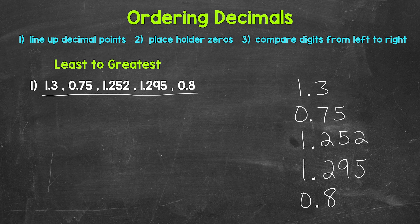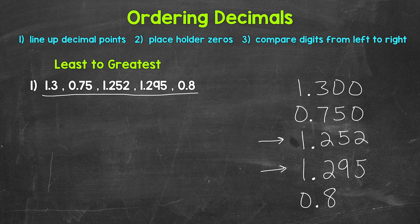We need to find the decimal that goes to the furthest place to the right — that's going to be the thousandths place, here and here. So let's use placeholder zeros to the right of the other decimals to make them go to the thousandths place as well. For one and three tenths, we need a placeholder zero here and here. For 75 hundredths, we need a placeholder zero here. And for eight tenths, we need a placeholder zero here and here. Now this looks a little more lined up and neater, and this will help us order.